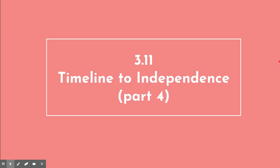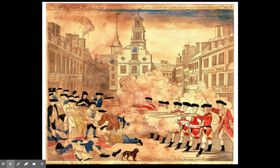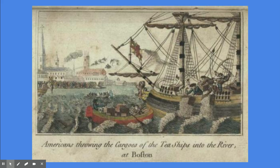Hello again, and welcome to another exciting episode of 7th Grade Social Studies. We are back on the Timeline to Independence. This is part four. We have been talking about the Boston Massacre and its effects and aftermath — the trial, et cetera. Skipping ahead to the next big event, also in Boston, which is the Boston Tea Party.